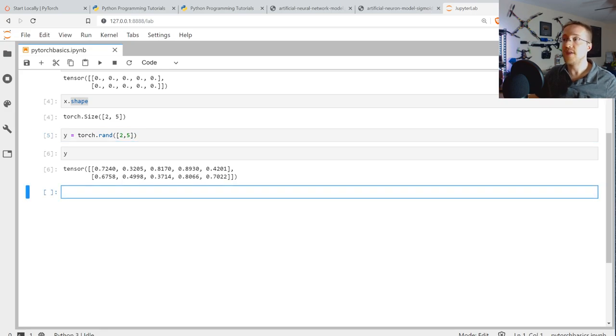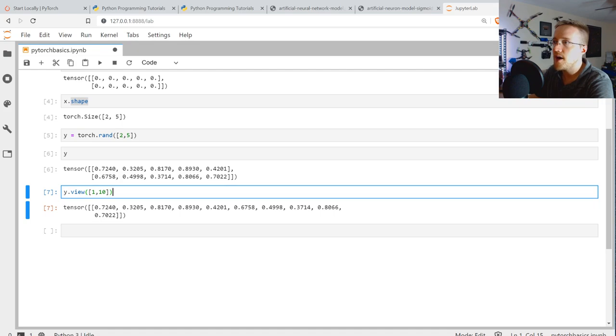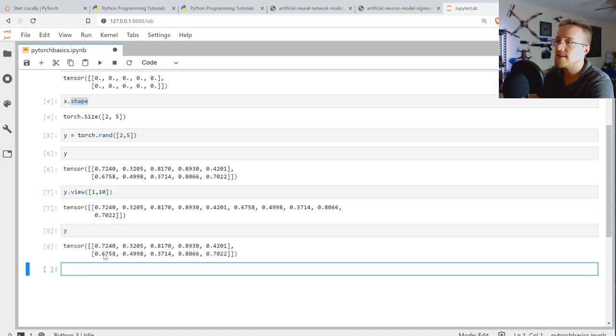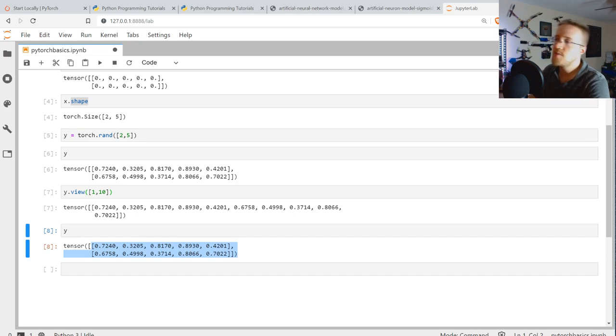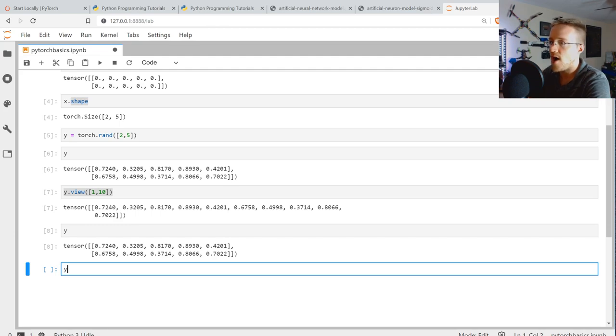If there's 2 by 5, if we flatten it, it would be a 1 by 10. Well, how do we do that though? So the way we would do that is with a reshape in NumPy, but here in torch, it's view. But one thing to keep in mind, I'll show in a moment - we would say 1 by 10. So there's your 1 by 10 reshape there.